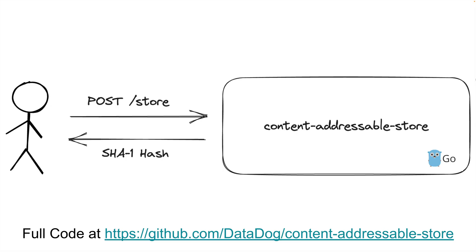If you're excited and want to enable this feature right away, check the description below this video for information on how to get started. If you're not sure yet, let me walk you through an example of how to use this feature to optimize the latency of a request. We will look at a service that has a POST /store endpoint, which receives an HTTP file upload and writes it to disk. The service also returns the SHA-1 hash of the uploaded data, which can be used for further operations against the file — also known as a content-addressable store.